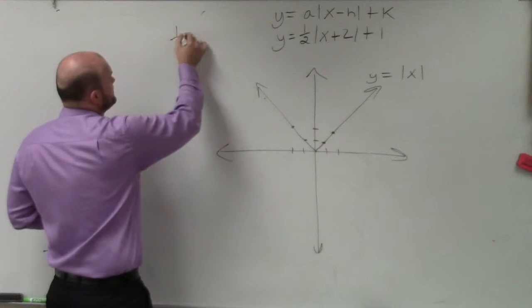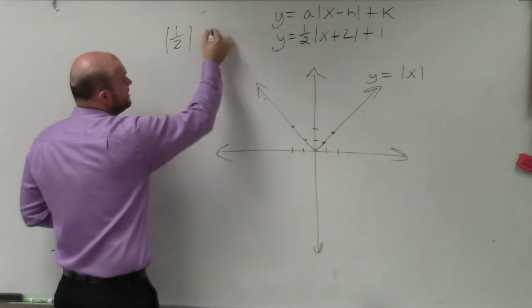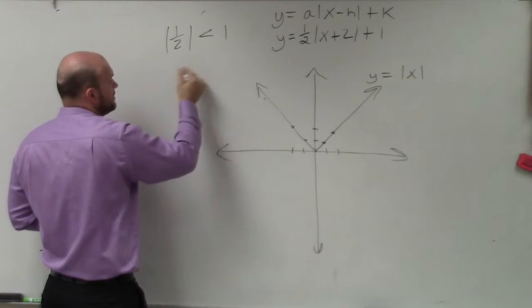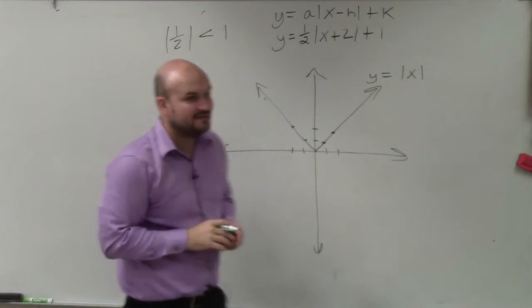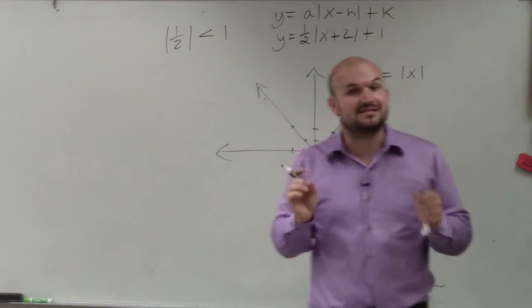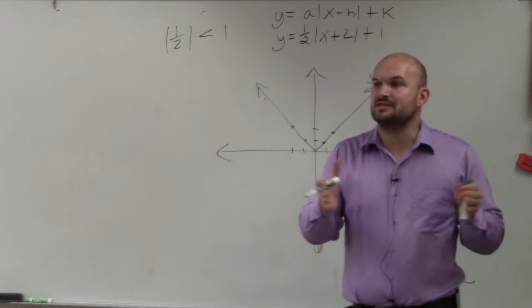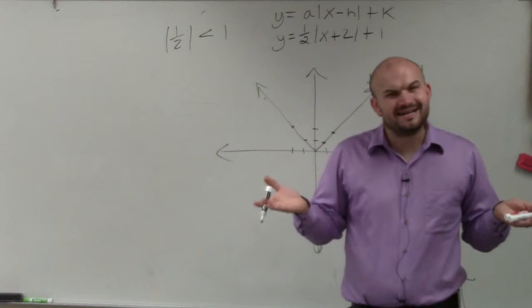Well, remember, we have the absolute value of a here is less than 1. So that, if you guys remember, when the absolute value of a is less than 1, what does that do? On your front page, that horizontally stretches your graph. Well, how does that do that?